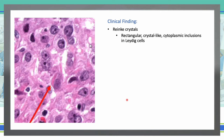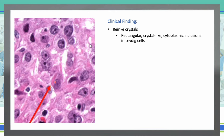Next, Reinke crystals. These are rectangular crystal-like cytoplasmic inclusions in Leydig cells. They are eosinophilic hexagonal crystals composed of 3-beta hydroxysteroid dehydrogenase, found in the cytoplasm. They are pathognomonic for Leydig cell tumor. The description in the question — rectangular crystal-like cytoplasmic inclusions — will help you identify this as Reinke crystals and a Leydig cell tumor.